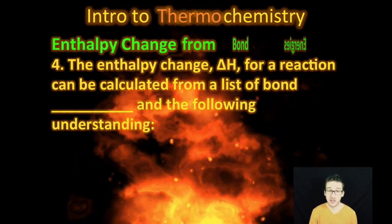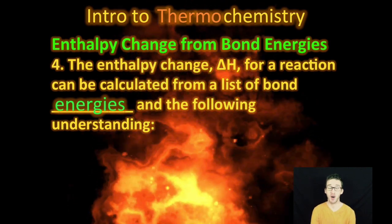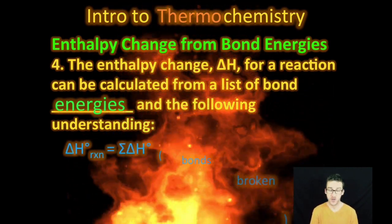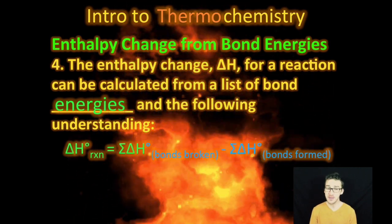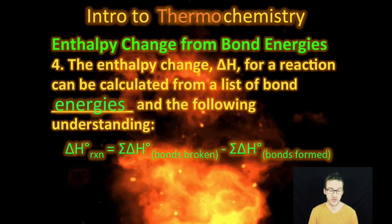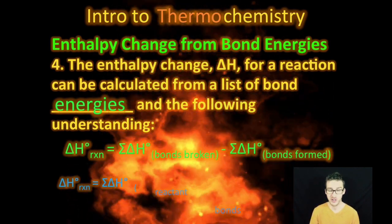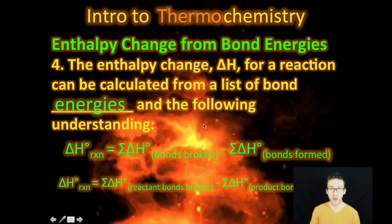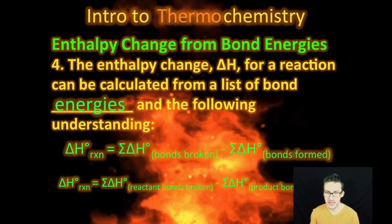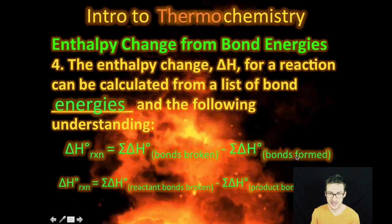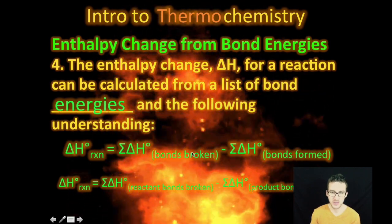We can then calculate the enthalpy change for a reaction using a list of bond energies and the following understanding. Now, you've got to be careful with this because it's very similar or seems very similar to another equation that we use when we're determining enthalpy of a reaction from heats of formation, but this one is using bond energies. So, recognize we have to sum together the energies of all the bonds broken, sum together the energy of all the bonds formed, and then subtract the energy of the bond formed from the energy of the bonds broken.